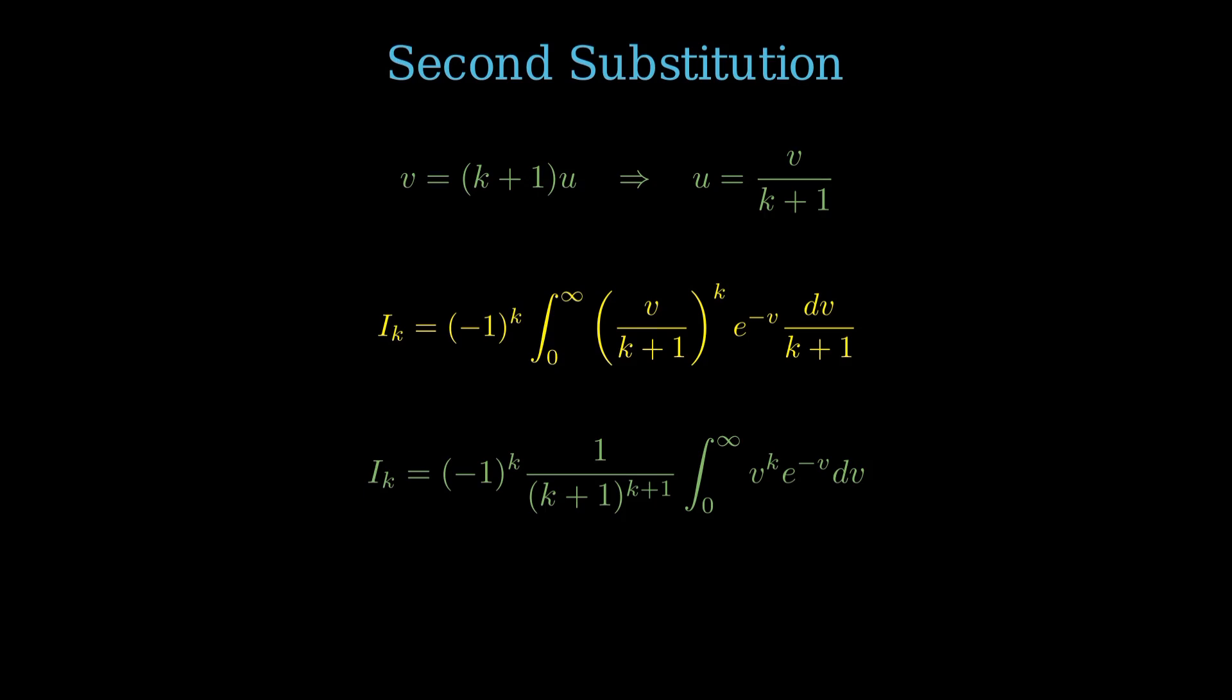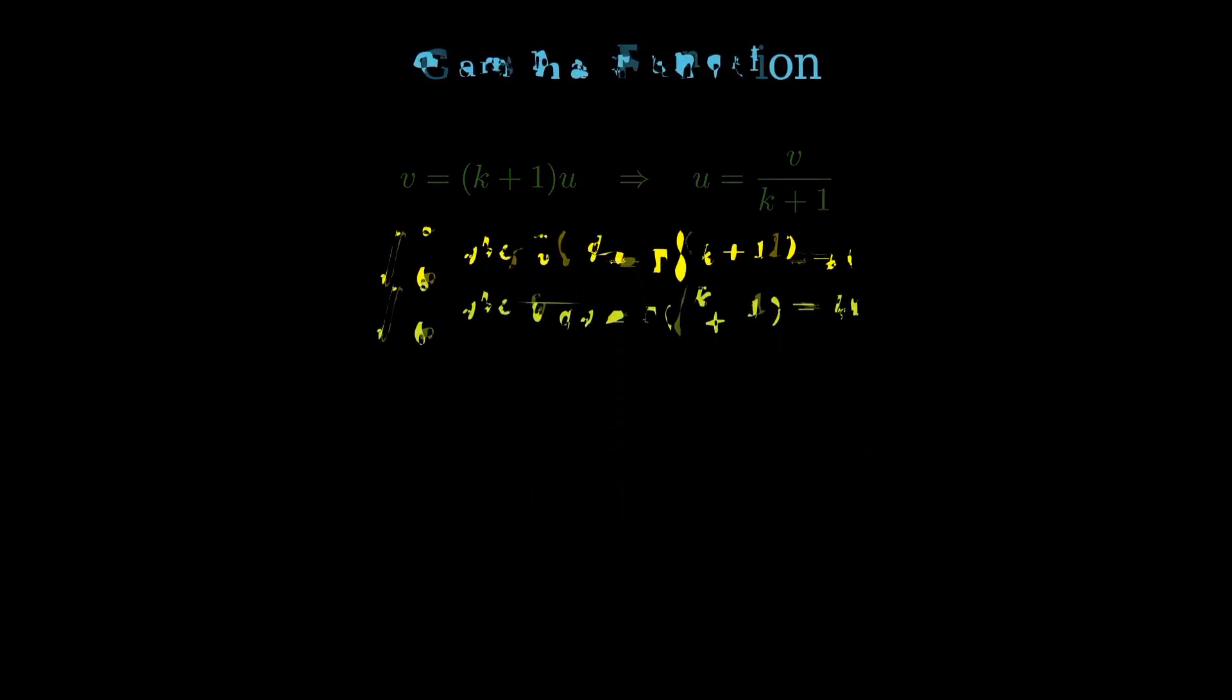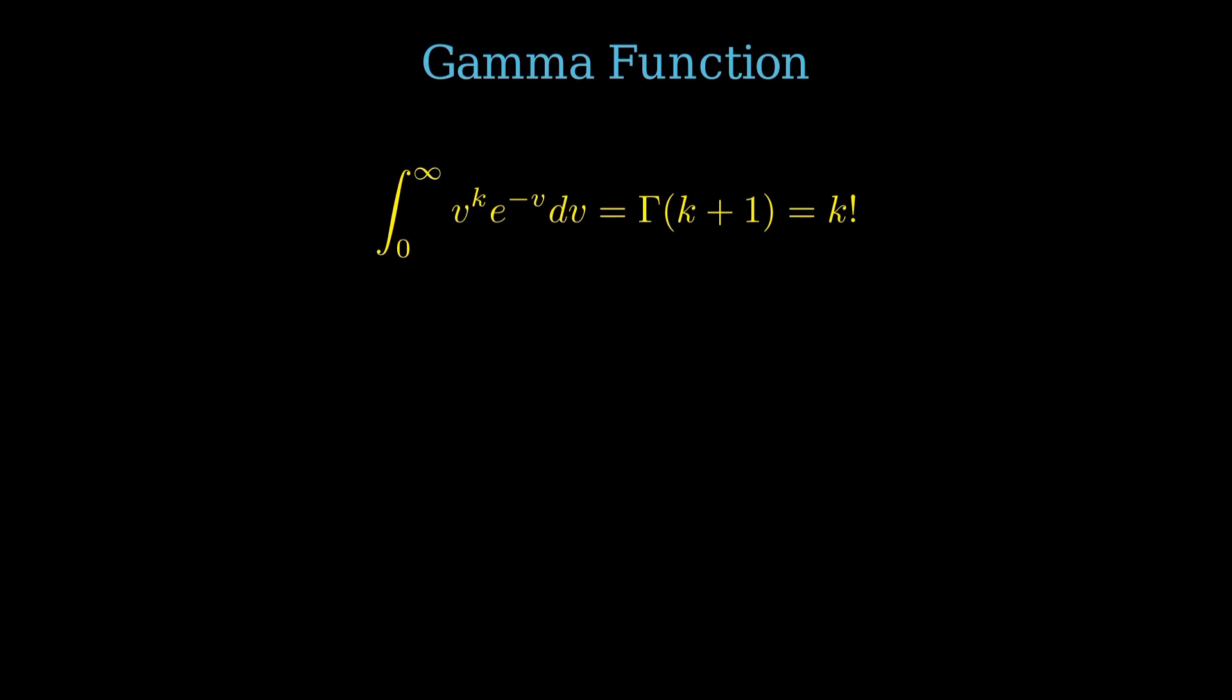Does that last integral, the integral of v to the k e to the negative v dv from 0 to infinity, look familiar? It's the Euler gamma function, gamma of k plus 1, which is equal to k factorial for non-negative integers k. So the integral evaluates to negative 1 to the k times k factorial over k plus 1 to the k plus 1.